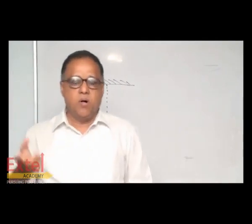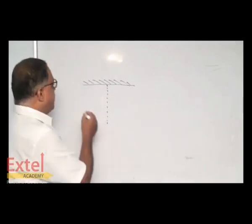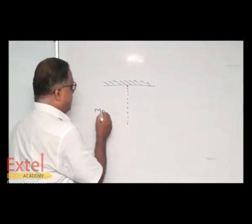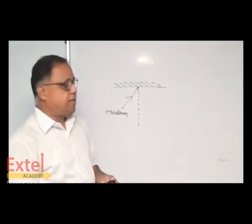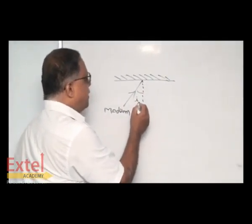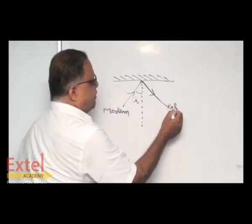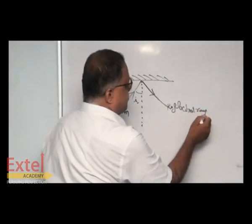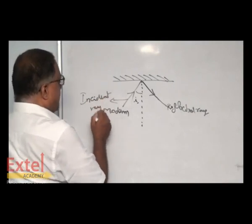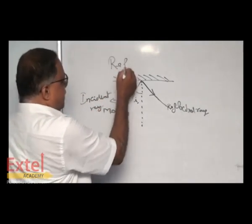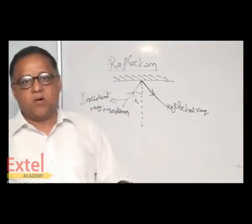Consider a ball. If the ball is thrown on a wall, definitely it will come back. For reflection we want only one medium. Suppose the ray is falling on a glass piece or mirror, that kind of incidence is always with the normal and the reflection will be along the reflected ray. This ray we call the incident ray. As per reflection is concerned, only one medium is enough, either rarer medium or denser.